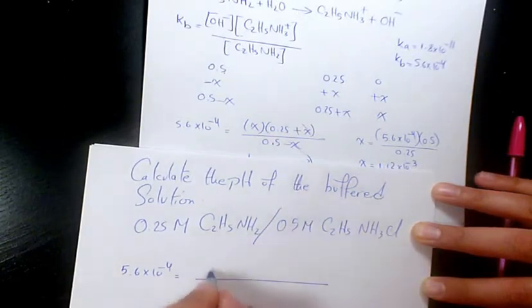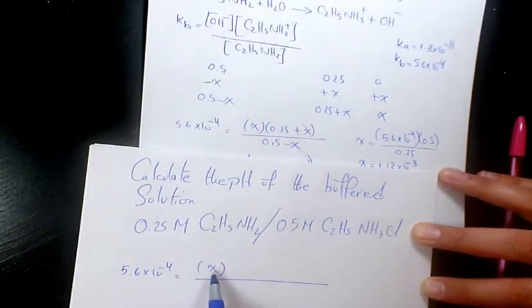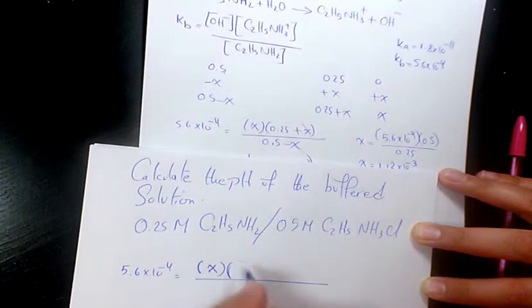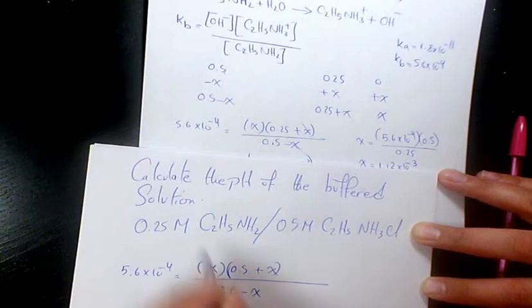So it's gonna be X which is the concentration of hydroxide ion, and the other ion is gonna be 0.5 plus X, and here we have 0.25 minus X.